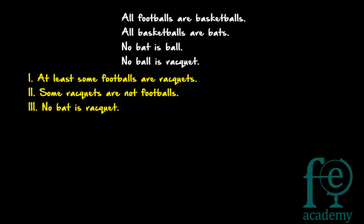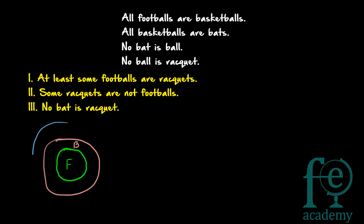So let's see the given statements. All footballs are basketballs — so the footballs circle will come wholly inside the basketball circle. Let the pink circle represent basketball. Again, all basketballs are bats — so the bat circle will contain the basketball circle. So footballs inside basketballs, basketballs inside bats. The next case is: no bat is ball.